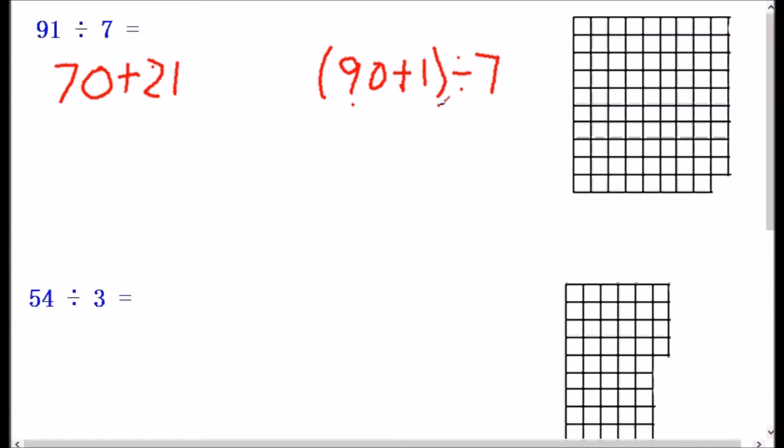So when we're breaking these up, we have to think of ways to break it up to where we can divide these numbers easily, where it'll divide evenly. So we're looking for multiples of 7. So 90 plus 1, even though that is a way of writing 91, it's not a good way to do this division. So we can turn it into 70 plus 21.